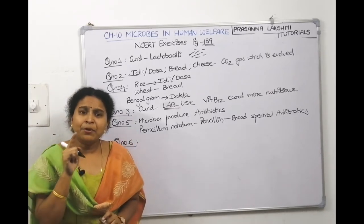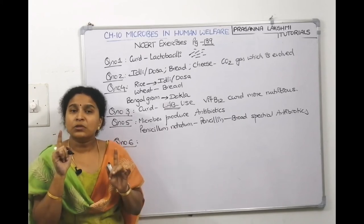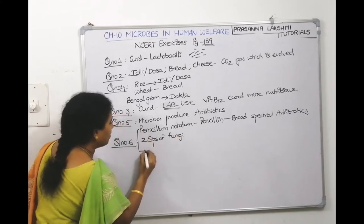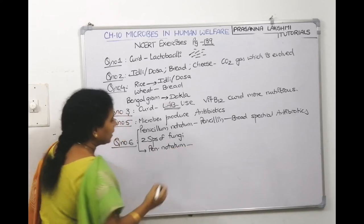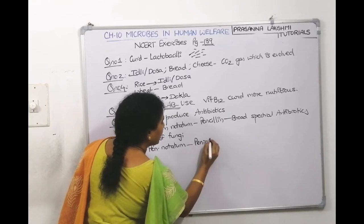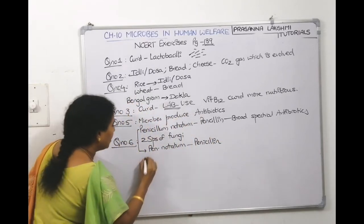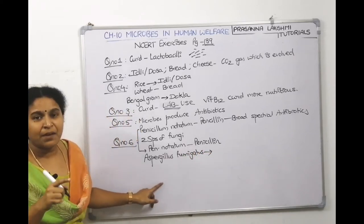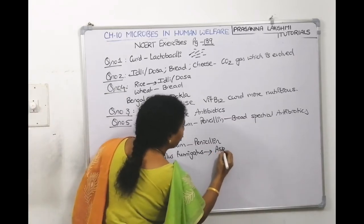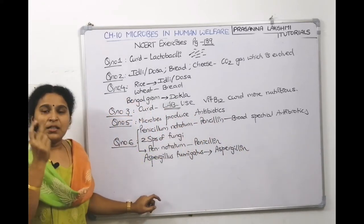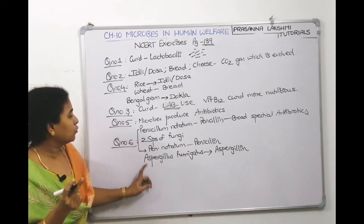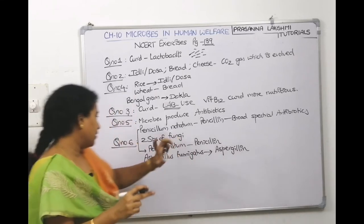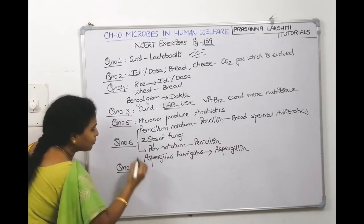Question 6: Name two species of fungi which produce antibiotics. First: Penicillium notatum — from which we extract penicillin. Second: Aspergillus fumigatus — from which we extract aspergillin. Two fungi with their antibiotics: Penicillium notatum → penicillin; Aspergillus fumigatus → aspergillin.